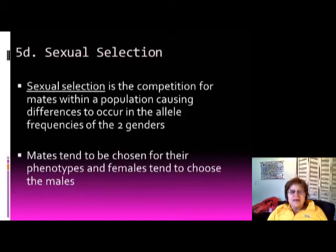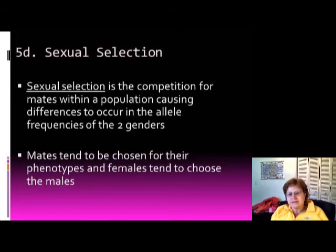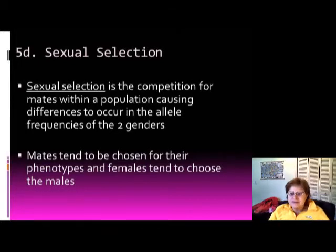Sexual selection is the competition for mates within a population, causing differences in allele frequency between the two genders. Mates tend to be chosen for their phenotypes, and in the animal world females generally choose the males. This appears to be true for many species.